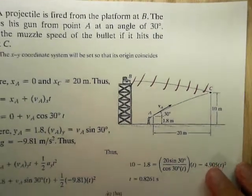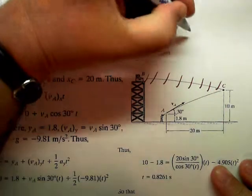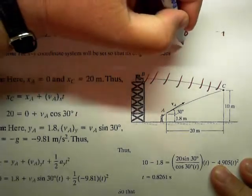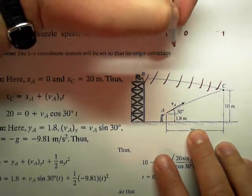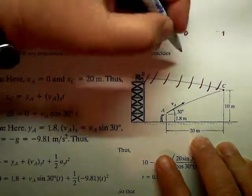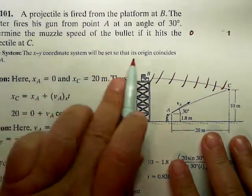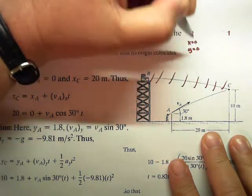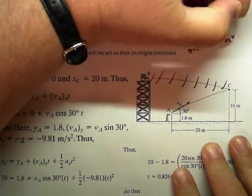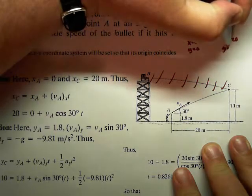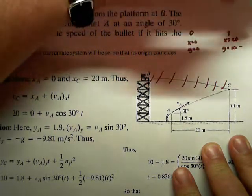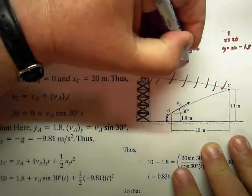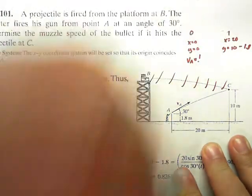Looking at a state diagram, there are clearly two states in the problem: state zero and state one. The data that we've been given is that at state zero, the problem says we're going to put our x-y coordinate system at point A, so x equals zero, y equals zero. At state one, x equals 20, y equals 10 minus the 1.8. VA is at state zero, we don't know it, and that's the quantity that we were asked for.